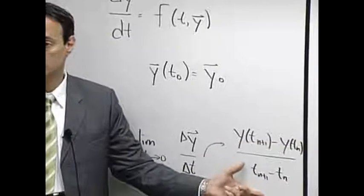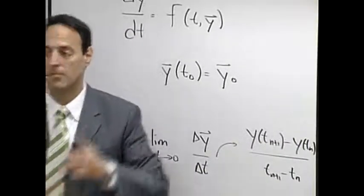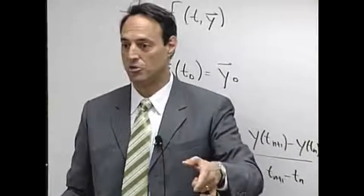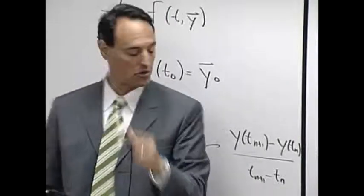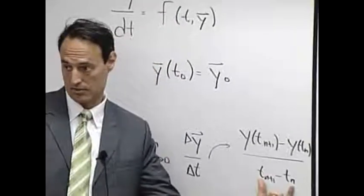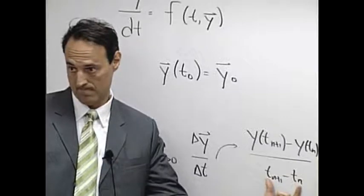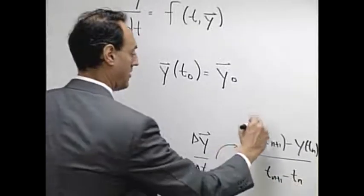At time t of n, time t of n plus 1 is my future time. So now I'm thinking about my Delta t being the difference between t of n plus 1 minus t of n. So I'll call this object here